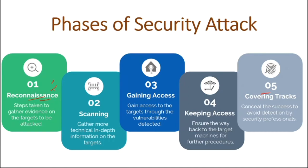The first step is Reconnaissance. In this stage, the attacker finds information about the victim and gathers details about the target. For example, if I'm an attacker wanting to break into your house, the first thing I do is identify your home — where it is and what surrounds it. The second step is Scanning — now that I've identified your home, I look for vulnerabilities: maybe a window is open, a door is open, or a seal is broken. In network terms, I scan which ports are open on your device.